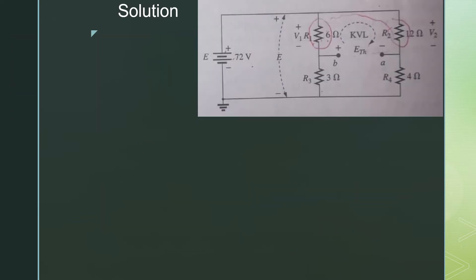Now, in the second step, we have to find the value of E Thevenin. From the figure, if we apply KVL to this loop, we will find the value of E Thevenin. But first we need the values of V1 and V2. When we have V1 and V2, applying KVL to this loop, we will get the value of E Thevenin.